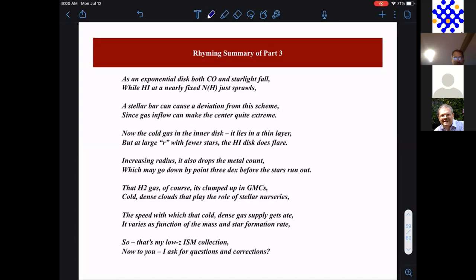That H2 gas, of course, it's clumped in GMCs. Cold dense clouds that play the role of stellar nurseries. The speed with which that cold dense gas supply gets ate, it varies with the mass and star formation rate.